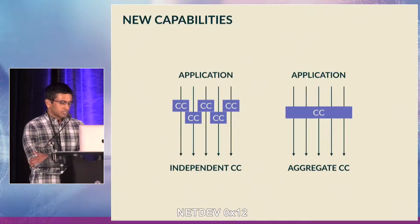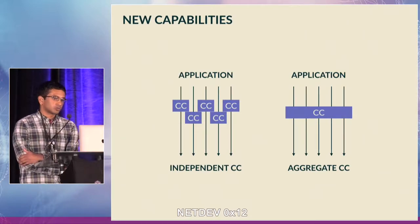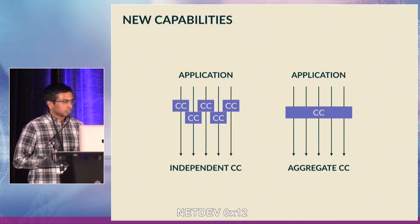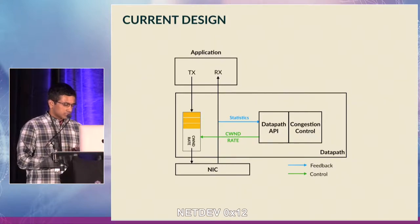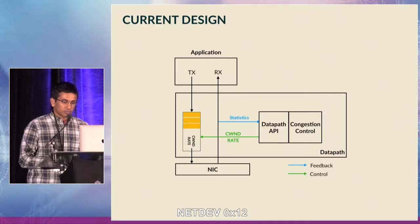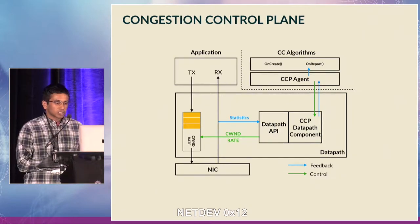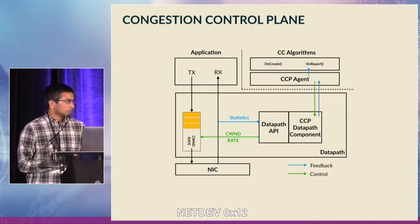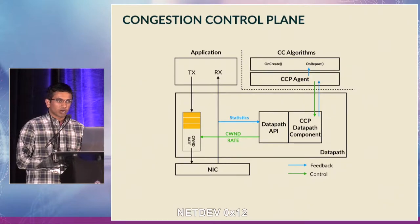To summarize, this is what congestion control looks like today: the application sends data to the datapath, which receives network feedback, maintains statistics, and exposes them via a custom API — for example, the pluggable TCP API in Linux. What we're proposing is to encapsulate congestion control in a separate component and decouple algorithm sophistication from the complexity of the datapath. We call this new architecture the congestion control plane, or CCP. Congestion control is moved out of the kernel and into user space.